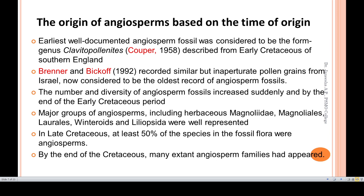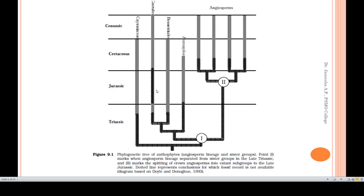By the end of the Cretaceous, many extinct angiosperm families had appeared. There are also many extinct animals in that area. Cretaceous is therefore an important time scale for the origin of angiosperms.